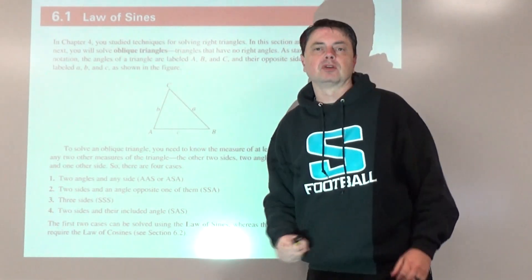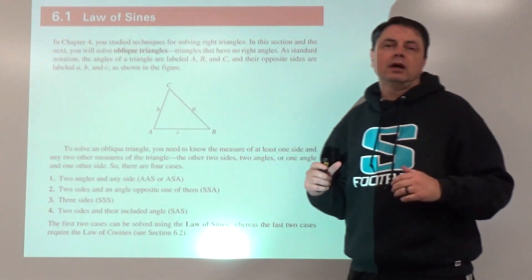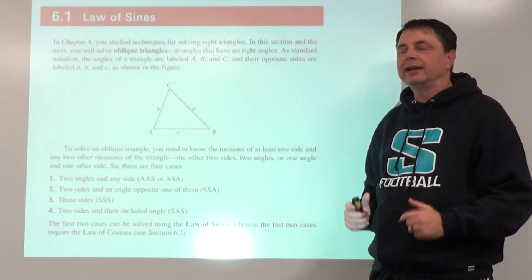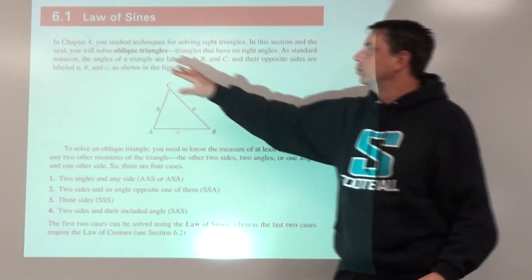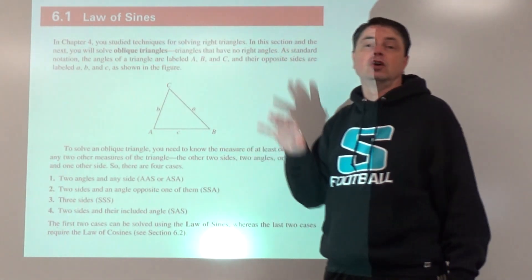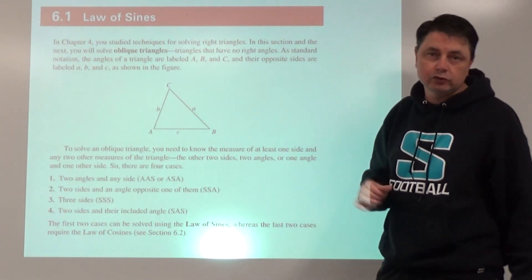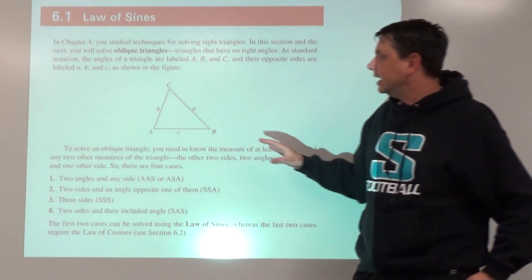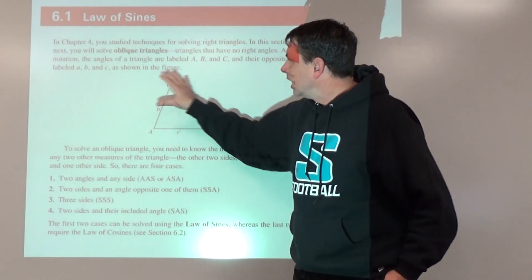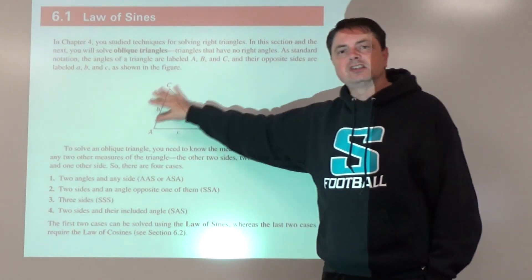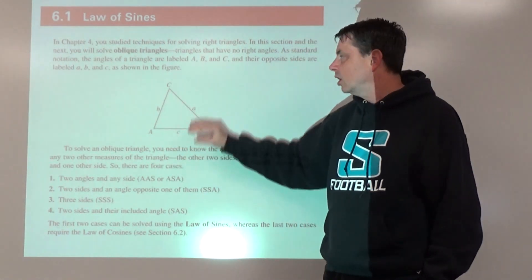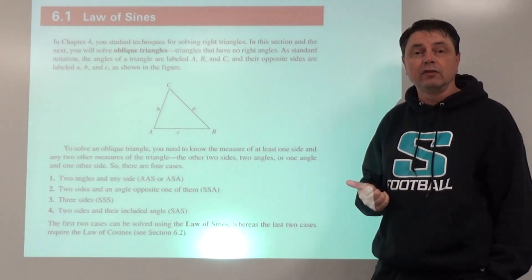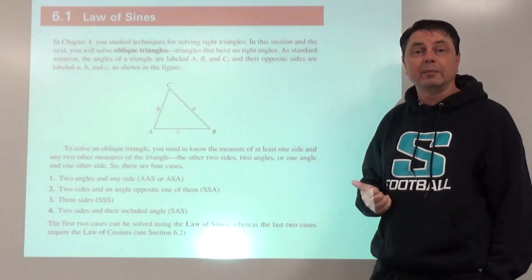As it says here, back in Chapter 4 we studied right triangle trigonometry. Now we're going to take a look at oblique triangles, meaning there is no right angle — so it could be acute or obtuse. In that case, we're going to be given three pieces of information, combinations of angles and sides, and be asked to solve for the remaining three.